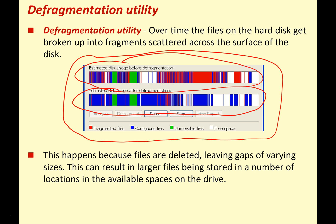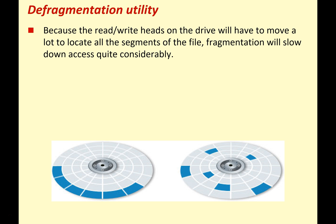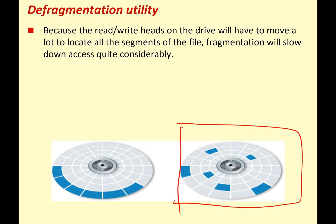Underneath the fragmented drive, we can see one that's been defragged — all the files are more coherent and in the same section. Because the read/write heads on the drive have to move a lot to locate all the segments of the file, fragmentation will slow down disk access considerably. You can see in this picture how all these sections are the same program or data, but they've been split around the sectors of the hard drive, as the OS had to fit the program into gaps left by other programs and data.